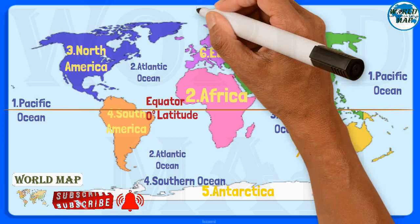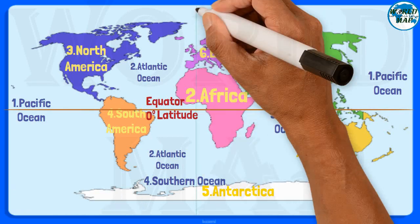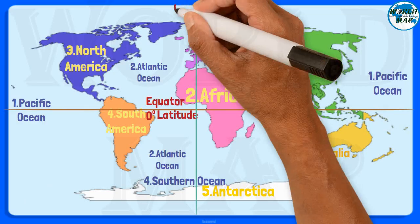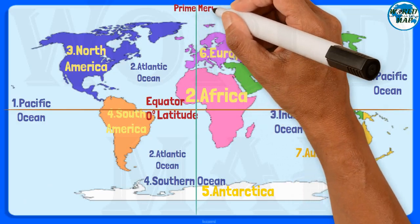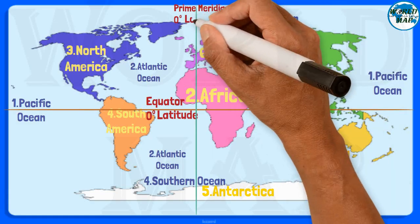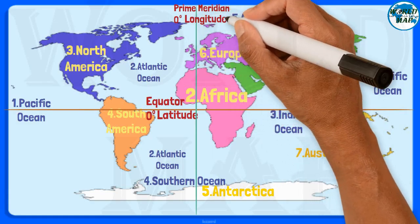Prime Meridian. The prime meridian is the line of zero degrees longitude, the starting point for measuring distance both east and west around Earth.